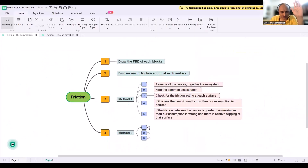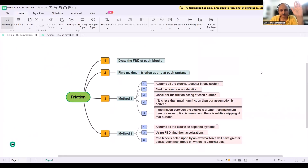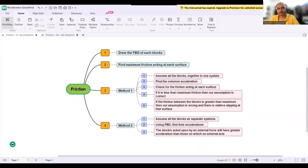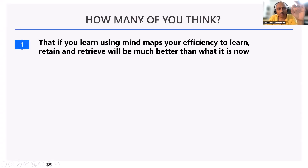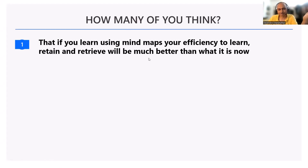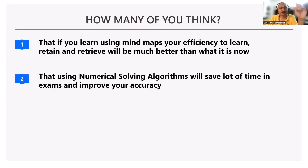Take a screenshot of the algorithm. If you solve 20 questions using this procedure, you'll quickly develop intuition for the correct assumption. This method is fully systematic — follow each step and you will never go wrong. Over 90% of friction problems involve block questions. Using this algorithm, you can solve more than 90% of friction problems. Mind maps help you retain and retrieve information much more efficiently.